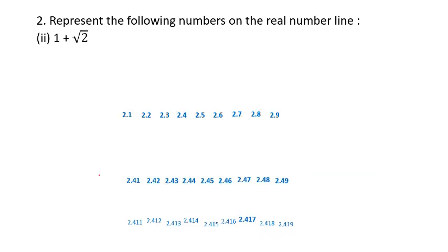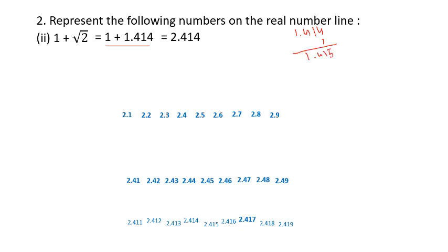Now let us solve 1 plus root 2. Pause the video and try it yourself first. The answer: 1 plus root 2 is 1 plus 1.414. A common student error is writing 1 plus 1.414 as 1.414 or even 5.414. You must align the decimal places: 1 is the same as 1.000, then adding 0.414 gives 2.414. So 1 plus root 2 equals 2.414.